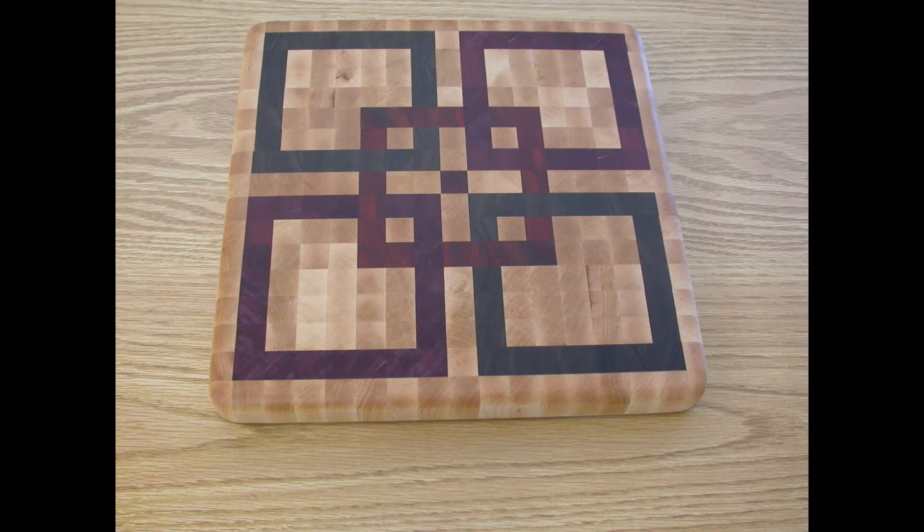Once you've decided on a pattern count the squares of each color representing the desired wood species in one half of the pattern plus the center row. Figure out one board foot of stock for each 10 squares. This plan will yield three individual boards.